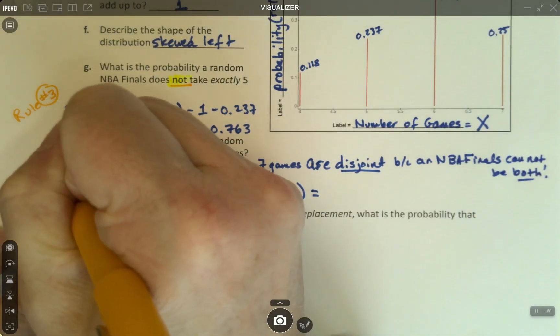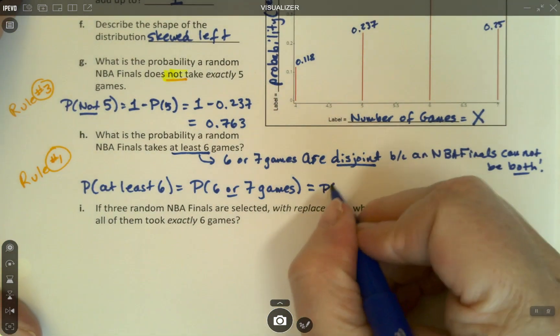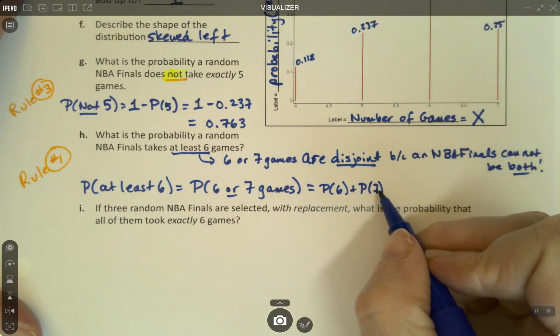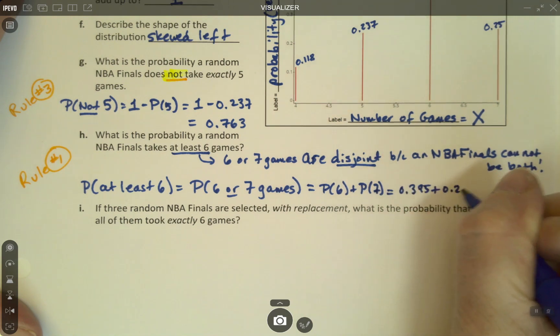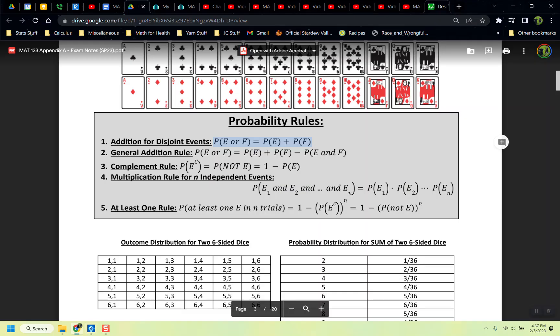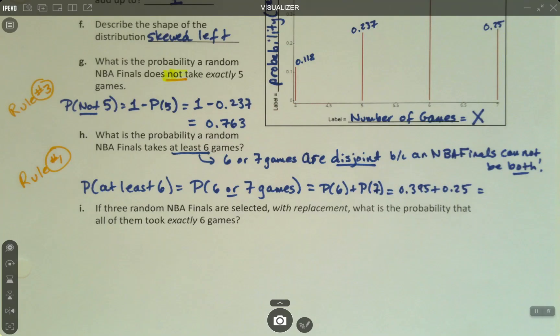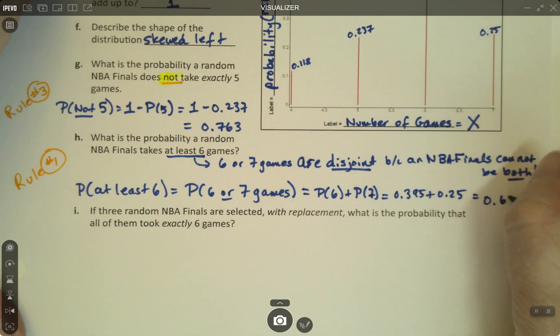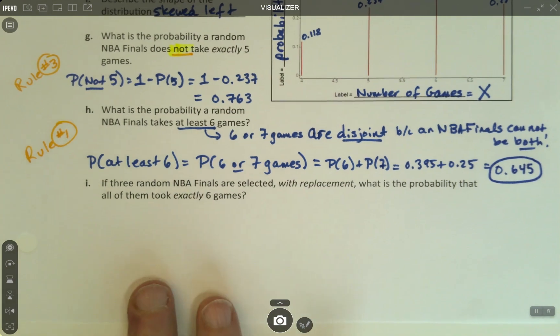I take the probability of six plus the probability of seven, which is 0.395 plus 0.25. We'll grab decimals and find what that is. 0.395 plus 0.25, I get 0.645.